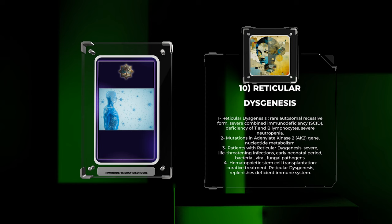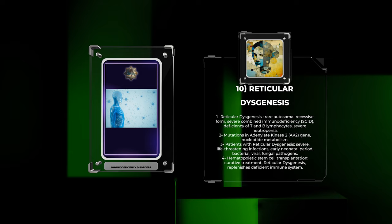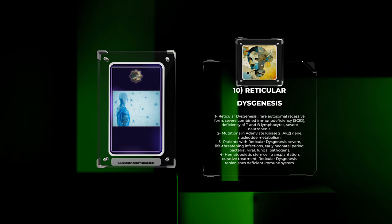Patients with reticular dysgenesis present with severe, life-threatening infections in the early neonatal period, including bacterial, viral, and fungal pathogens. Hematopoietic stem cell transplantation is the curative treatment for reticular dysgenesis, as it replenishes the deficient immune system.